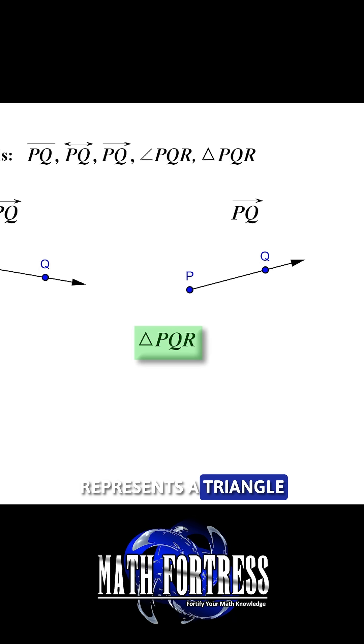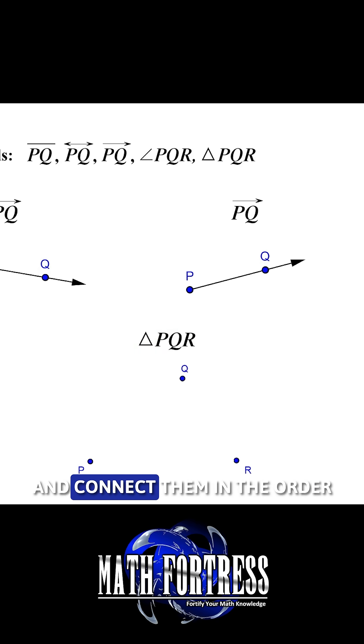The final symbol represents a triangle and like an angle it also requires three points. In this case each of the points will be connected by a line segment so we first draw points P, Q and R, then we go ahead and connect them in the order represented by the symbol. So P connects with Q.